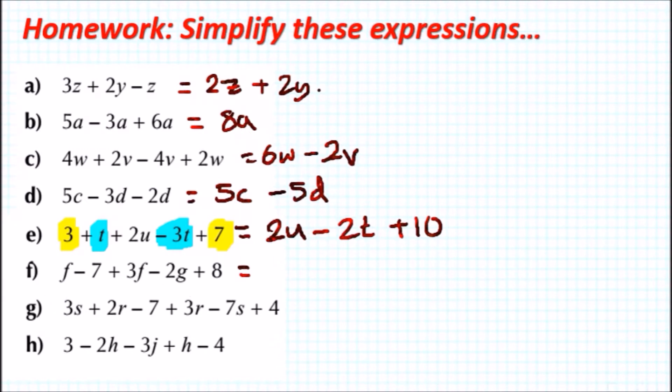Next we've got g, so we've just got -2g only, so -2g. And last we've got -7 + 8, so 8 take away 7 is plus 1.